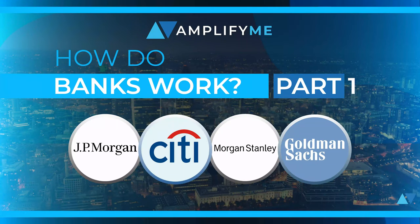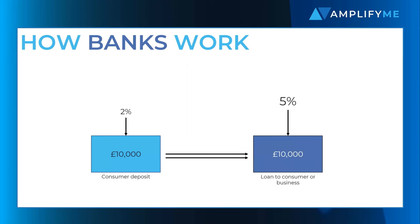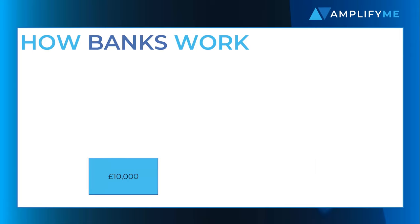How do banks work? The business model for all banks, regardless of size, geography, or type, is the same. The goal is to earn more from lending money than you have to pay to providers of capital. For example, if you receive ten thousand pounds from a consumer deposit at two percent interest, then lend it out at five percent, that three percent spread enables the bank to make a profit and compensate it for the risk that the borrower will not be able to repay the loan.